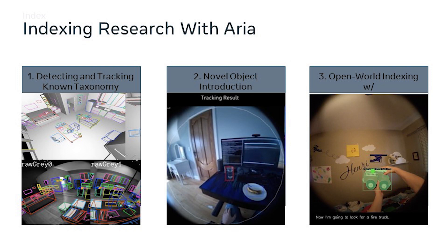I'll give a quick overview of our research projects to enable scene understanding and indexing using Project ARIA. We currently have three different streams. The first is detecting and tracking known objects from a known taxonomy — if you already know ahead of time the category of objects you want to detect. The second focuses on novel introduction of objects that can be detected and tracked using Project ARIA. And finally, I'll touch on our work leveraging natural language to detect objects in the real world without having to predefine what you want to detect and track, getting more towards open-world indexing.